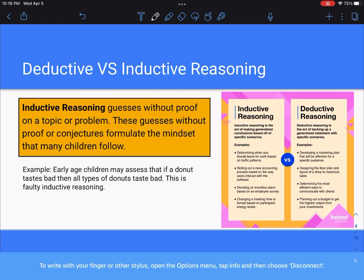Now let's talk about deductive versus inductive reasoning. So inductive reasoning guesses without proof on a topic or problem. These guesses without proof formulate the mindset that many children follow. An example of how this works would be donuts. If you are a child and you have a donut that tastes disgusting, that's stale, then you might automatically assume that if that donut was bad, all donuts are bad. And that is obviously not true. It was just one bad experience. But this is also an example of faulty inductive reasoning.